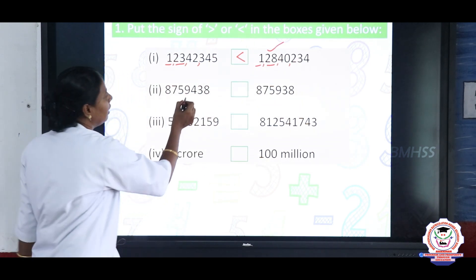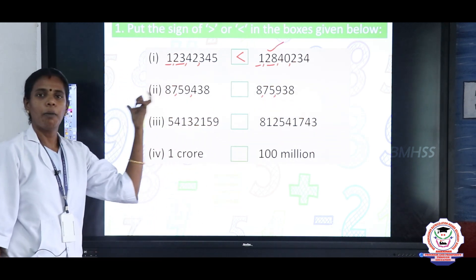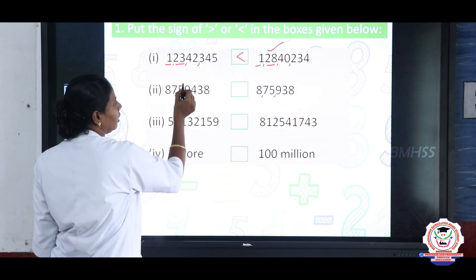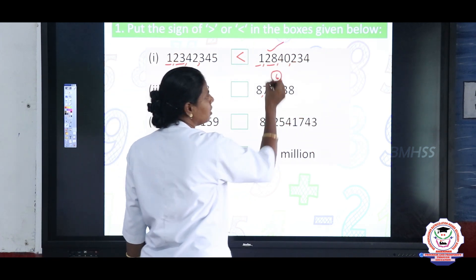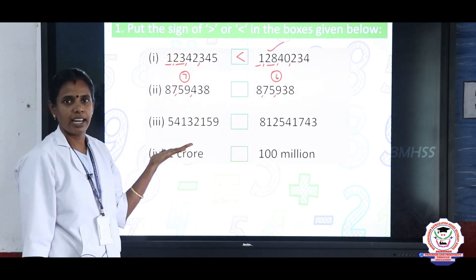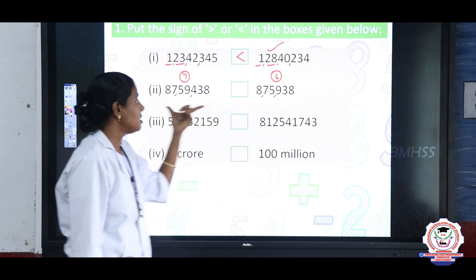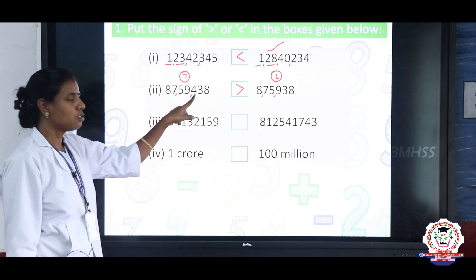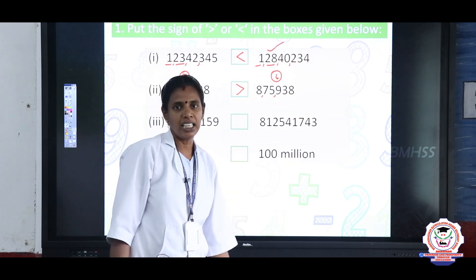For the next example, place the commas before comparing the numbers so we can count whether the digits are the same or different. Here we have a 7-digit number and there a 6-digit number. By comparing the number of digits alone, we can say the number with more digits is greater. So which is greater — the 7-digit or 6-digit number? The 7-digit number is greater: 87,59,438 is greater than 8,75,938.